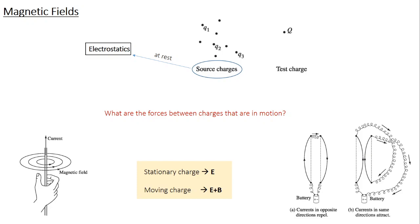If you assume that only an electric field is associated with a charge, then this is difficult to comprehend. Which means there is something other than an electric field coming into action here. By chance, if you take a magnetometer or a compass close to this current-carrying wire, you will find that the needle of the compass rotates, indicating the presence of a magnetic field. This is the major difference between a stationary charge and a moving charge: for a stationary charge, only an electric field is associated with it, whereas for a moving charge, a magnetic field also comes into picture.